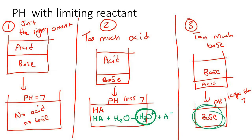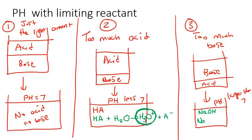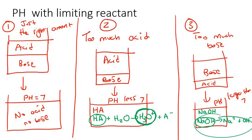In the excess-base scenario, the leftover base — for example NaOH — dissociates in water, producing OH⁻ ions, and that's what causes the pH to go up. So: acid and base fight. Leftover acid ionizes in water; leftover base dissociates in water.